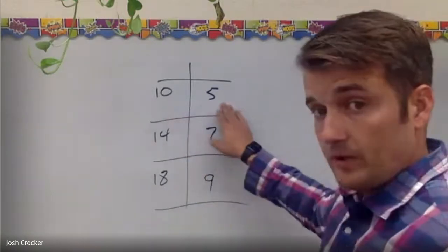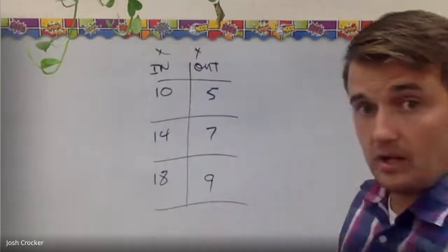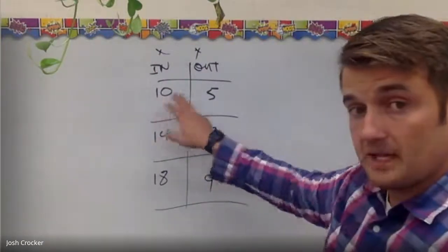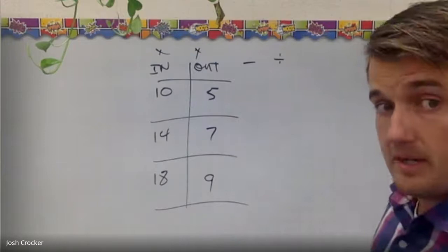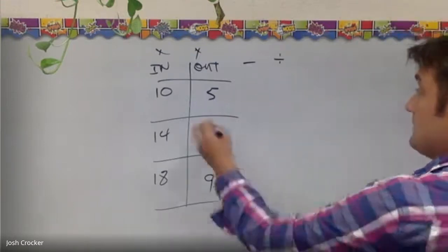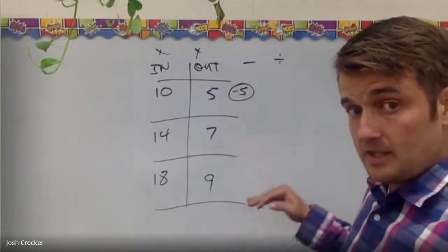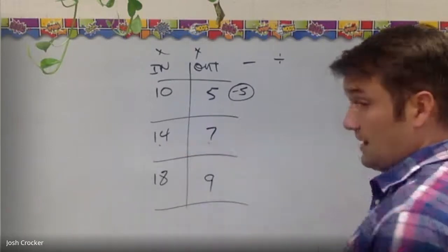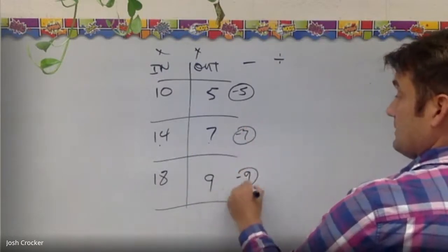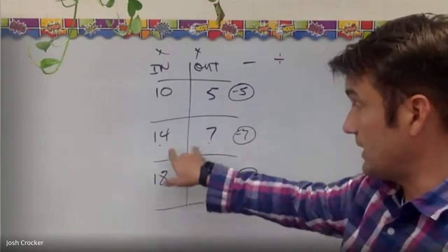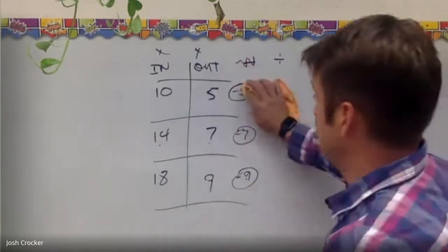What is the rule for that table? Going across here from in to out, or from x to y, whatever they want to call it, I can say that from 10 to 5, it went down, so I'm either subtracting or dividing. Those are the two things that make numbers smaller. And this was minus 5. If it's a subtraction machine, minus 5 will continue to work. Well, 14 minus 7 is not 5, it's minus 7, and 18 minus 9 is 9. So the jumps are getting bigger. These numbers are getting farther apart, so it's not subtraction, it's division.